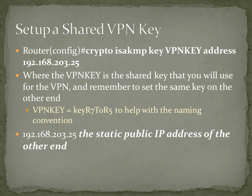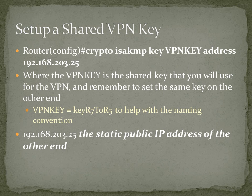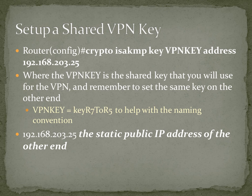Remember that your IP address when you're entering it is the static public IP address of the other end — it's not yours, it's someone else's. So the command is: crypto ISAKMP key, key R7 to R5 address, then 192.168.203.whatever the external IP address of that router is. That's how they're going to communicate and share keys — you're poking in someone else's IP address, because you want to talk to the other router and you need to know his public IP address.